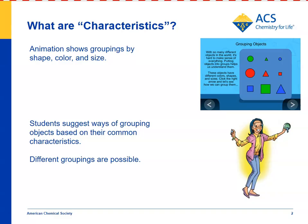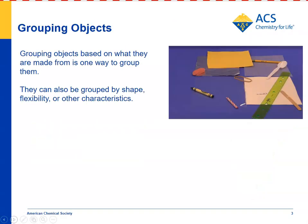Or you could group according to flexibility, and the plastic lid would be by itself because it's flexible, but the coin and the key would be together because they're stiff. Then, you could actually give students a set of materials and decide how they want to group them — according to the material they're made out of, whether they're flexible or stiff, or their shape, whether they're long and skinny, flat, or irregular shape.